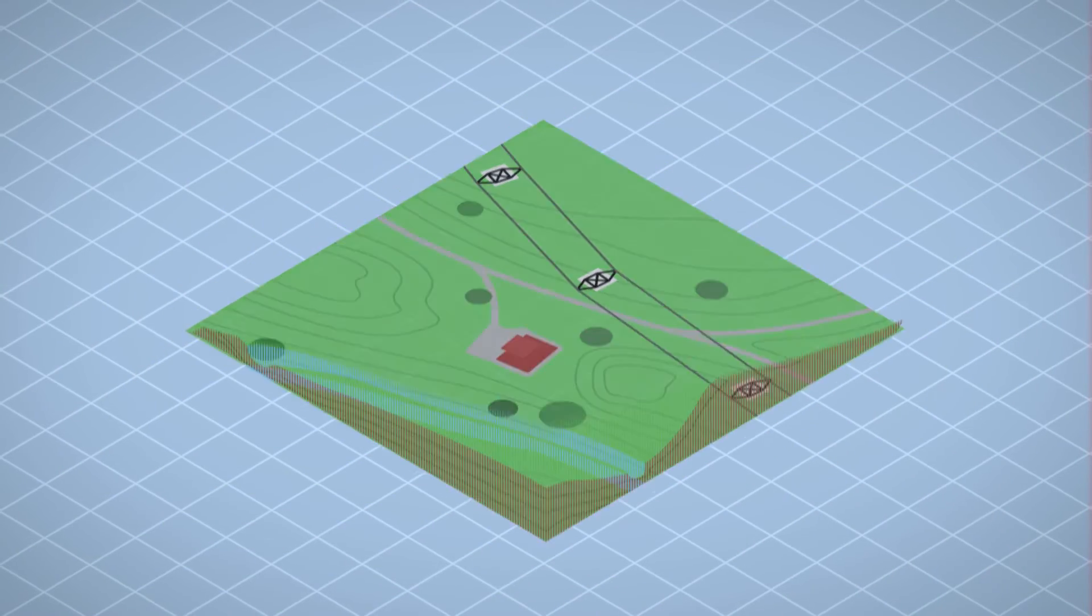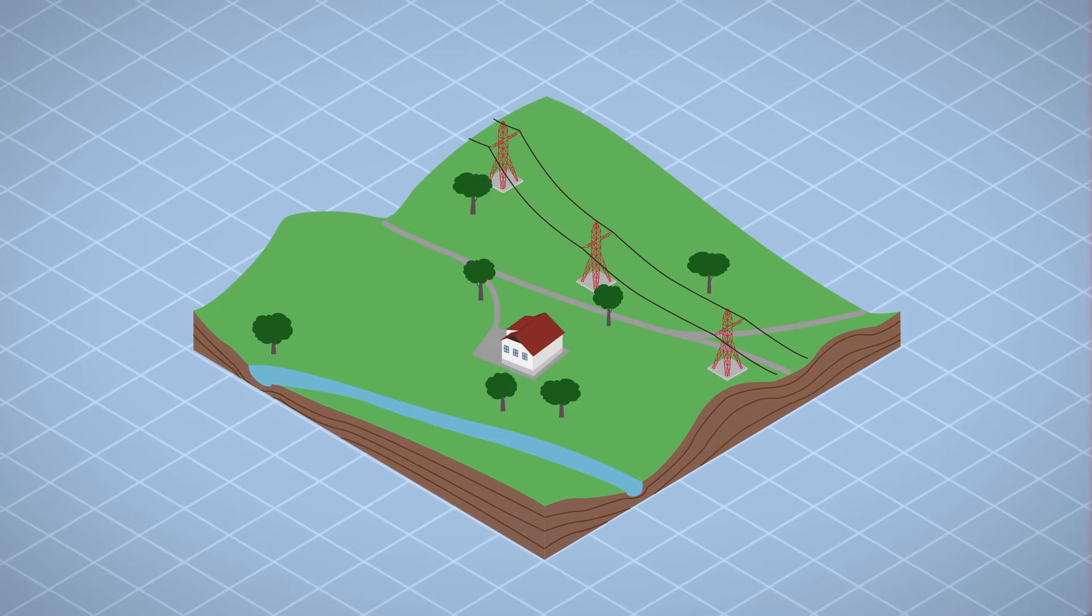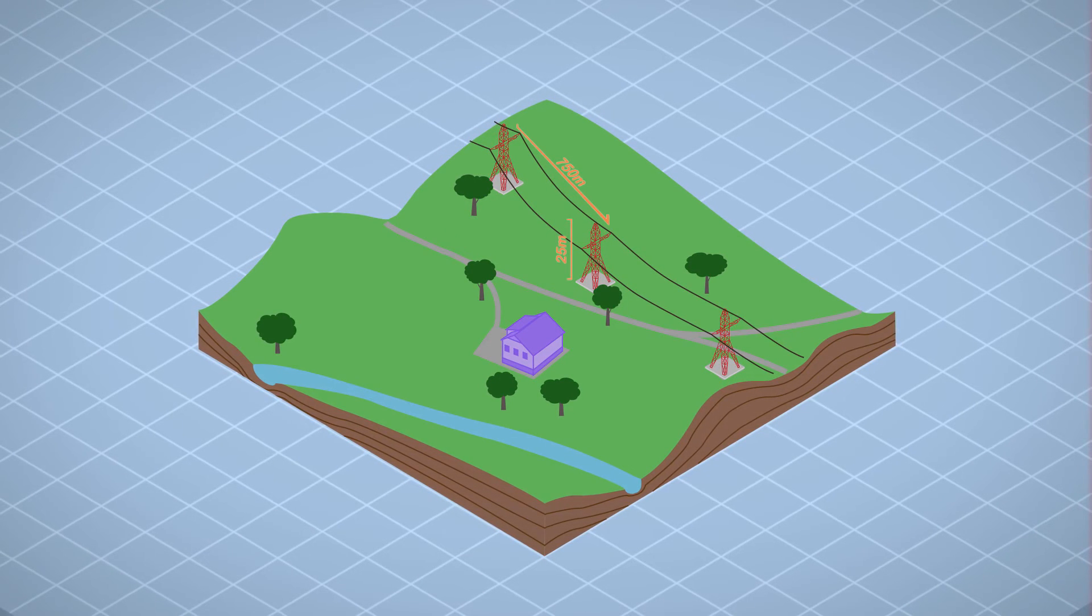Using laser scanning and orthophoto technology, we can precisely model network geometry and classify relevant corridor objects.